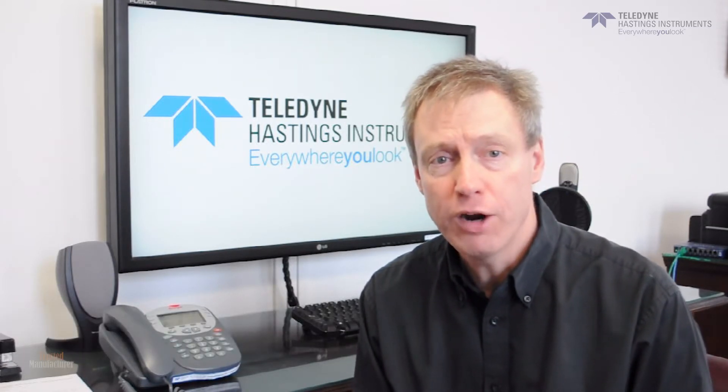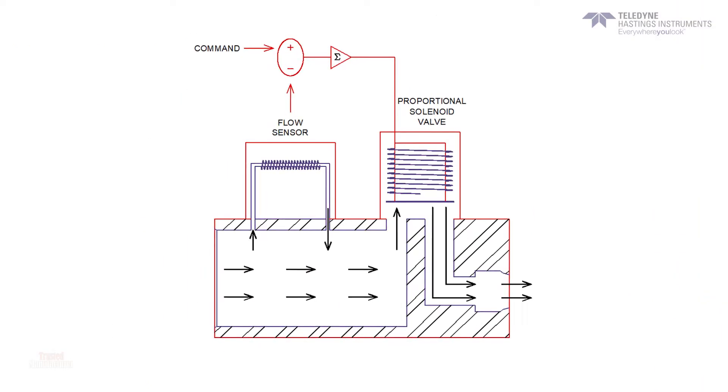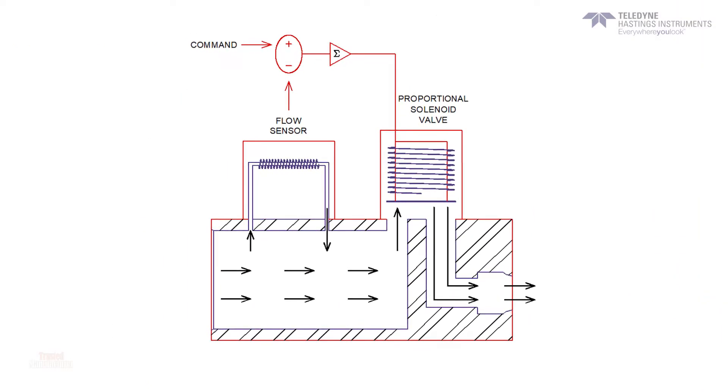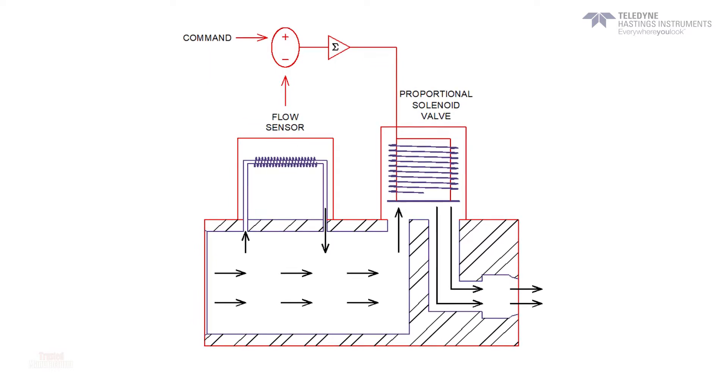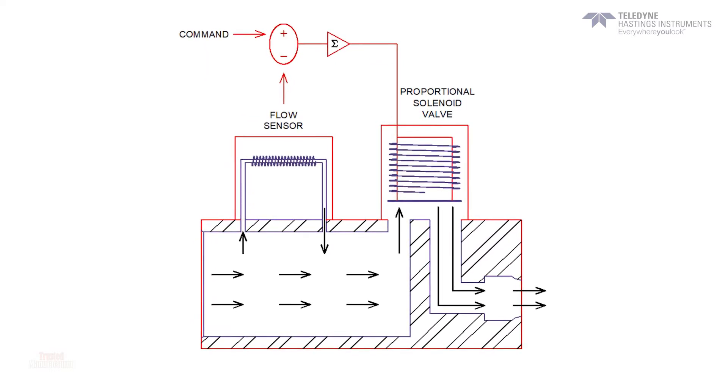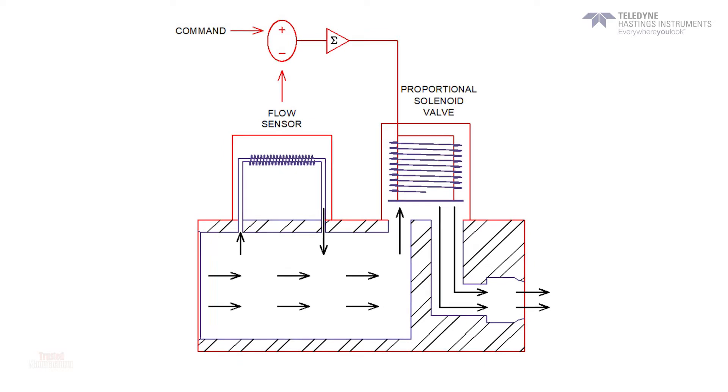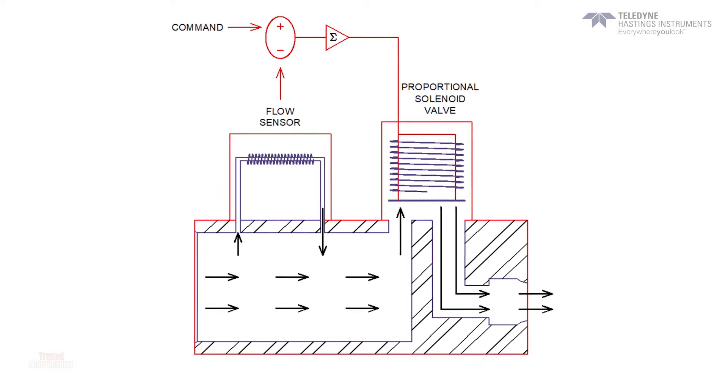Many viewers probably already know that a flow controller measures flow and then compares the flow measurement to the user's set point command. Then internally, the flow controller decides how to adjust the proportional solenoid valve. In the flow control mode, the flow signal is the feedback in the control loop.